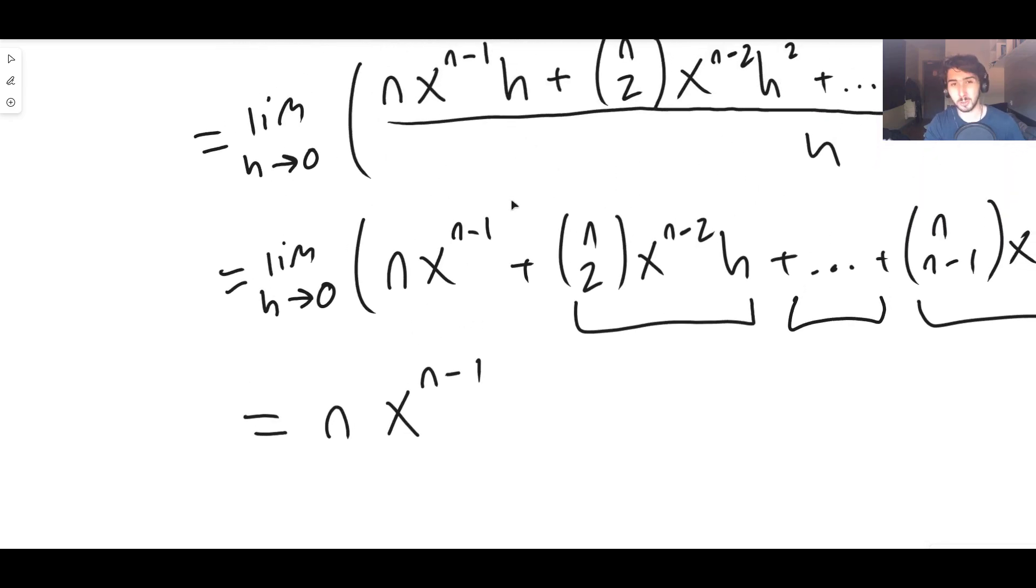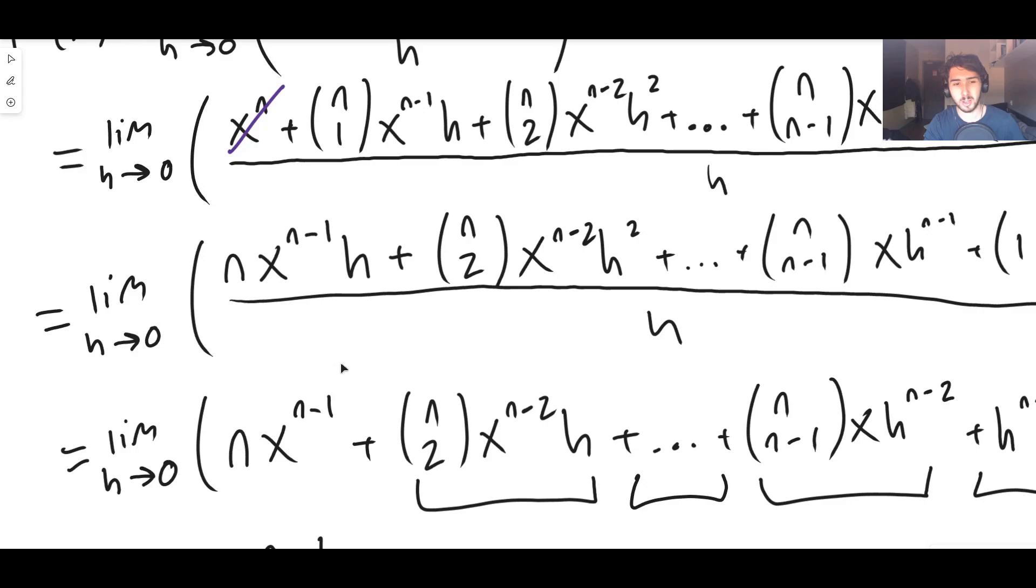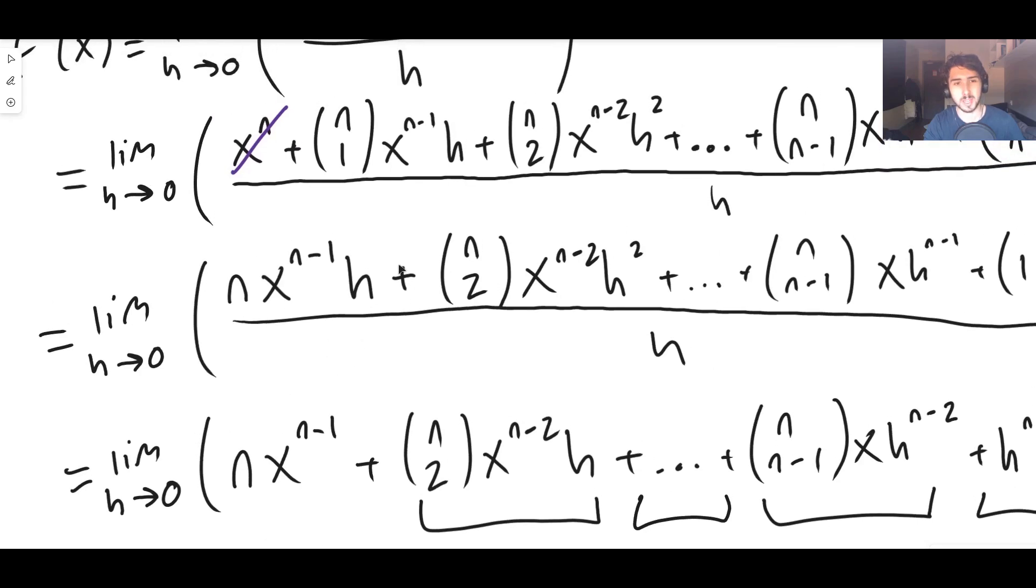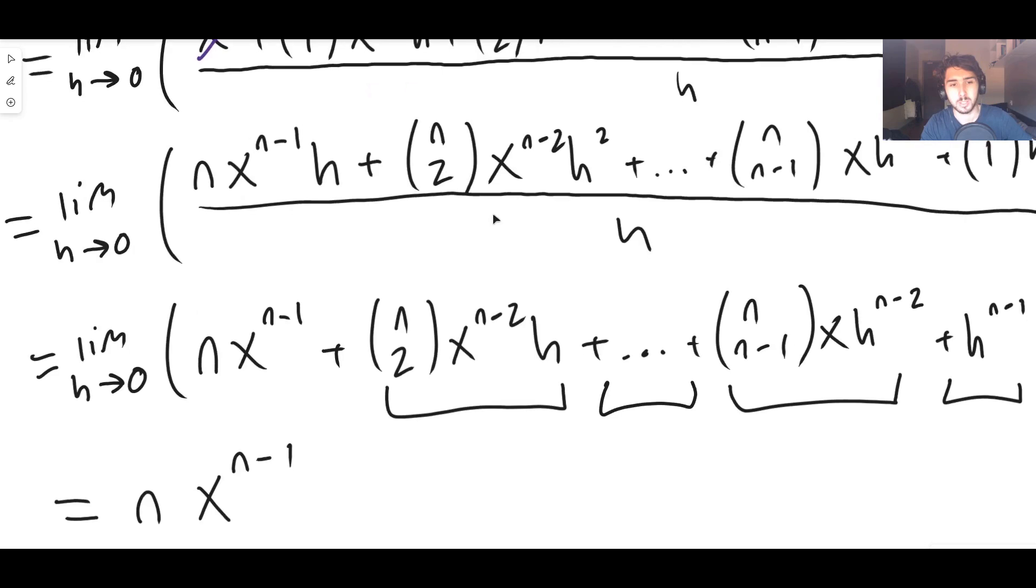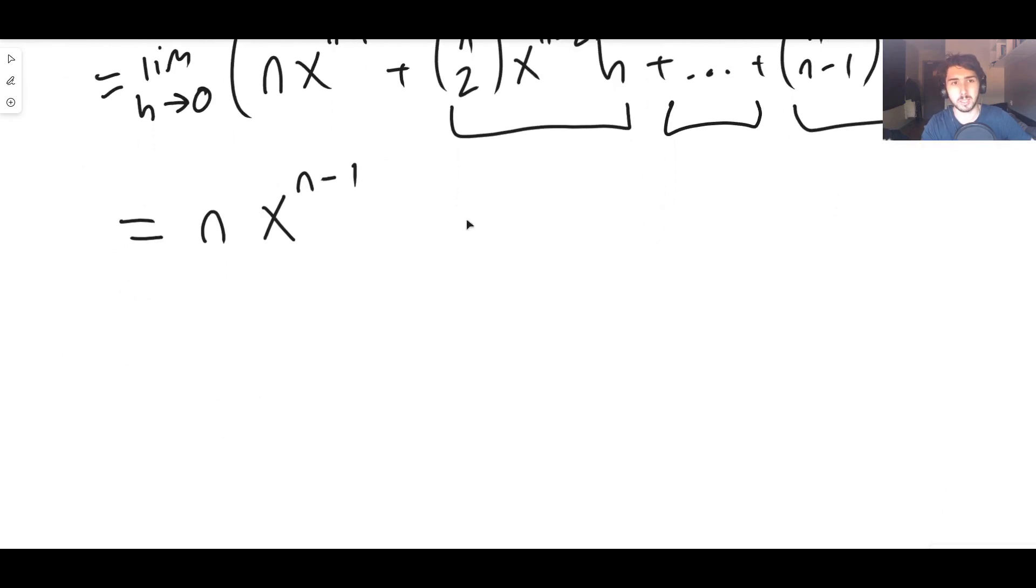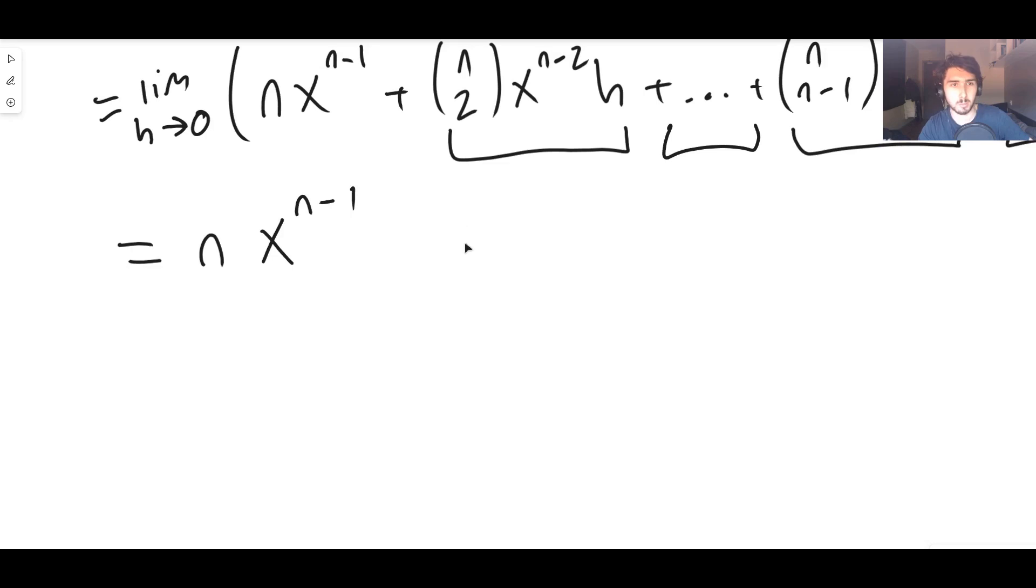The reason this only works for natural numbers is because if n was not a natural number to begin with, we couldn't have used the binomial expansion. It only works for natural numbers. That's why this only works for natural numbers. x plus h to the n is only all of this stuff if n is a natural number.